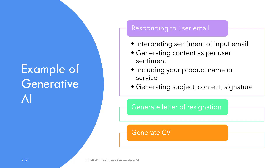One way of doing that is to instruct ChatGPT to extract the sentiment of the original email, and based on the sentiment value, you either generate an email thanking the customer for their appreciation of your service, or apologize if the customer is angry, and inform them that their complaint is being looked into and they would receive a response within 7 business days or something similar.